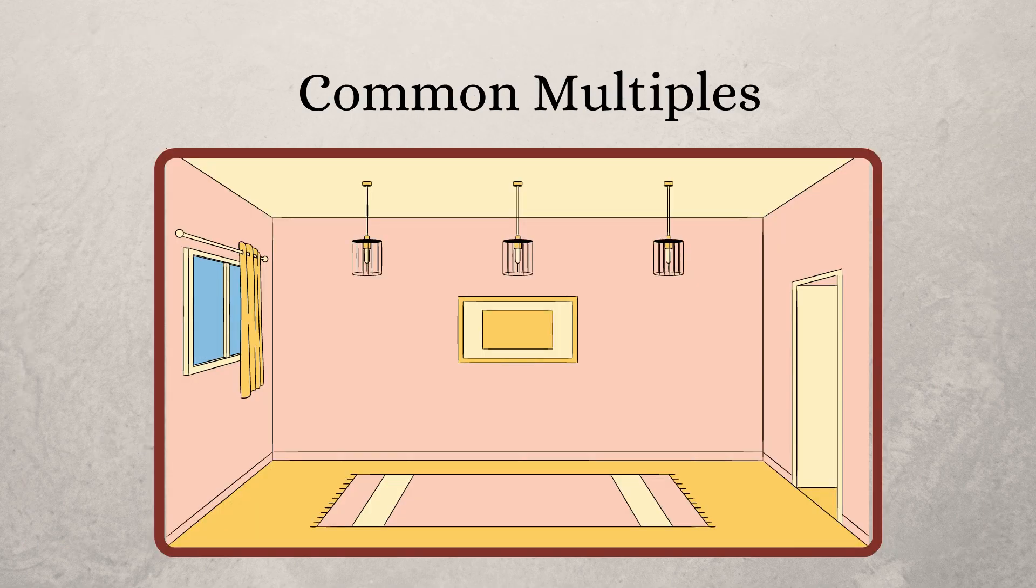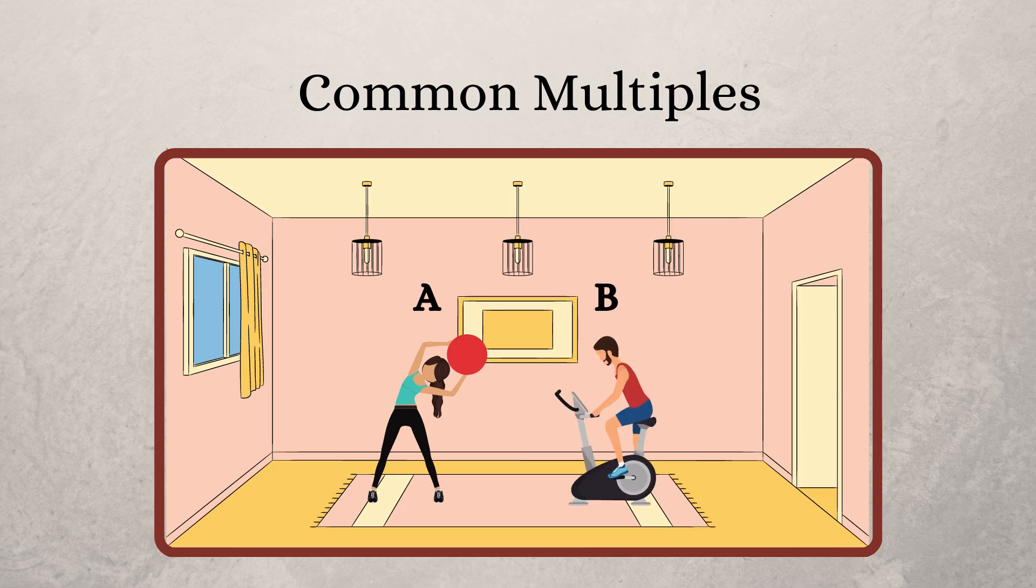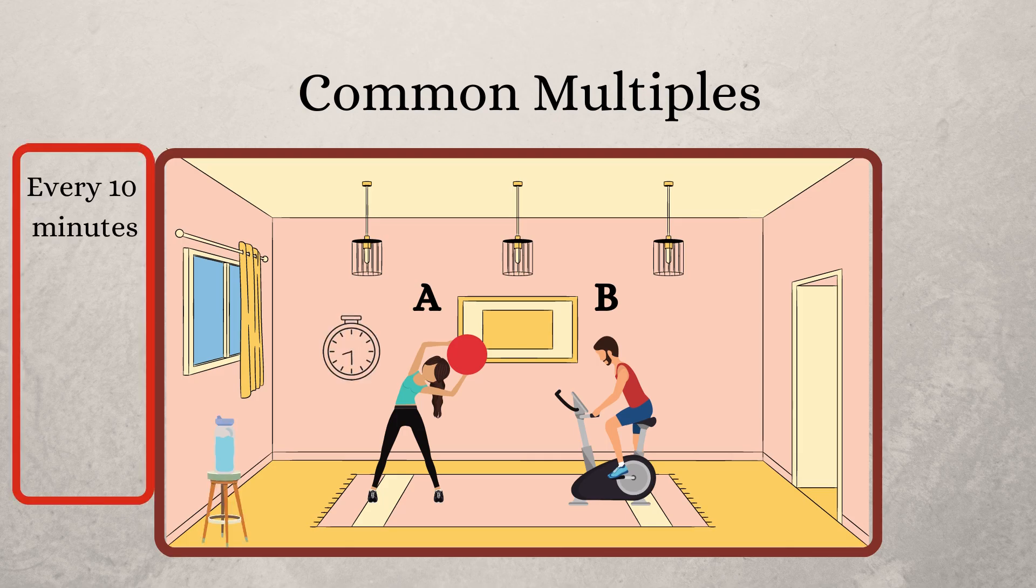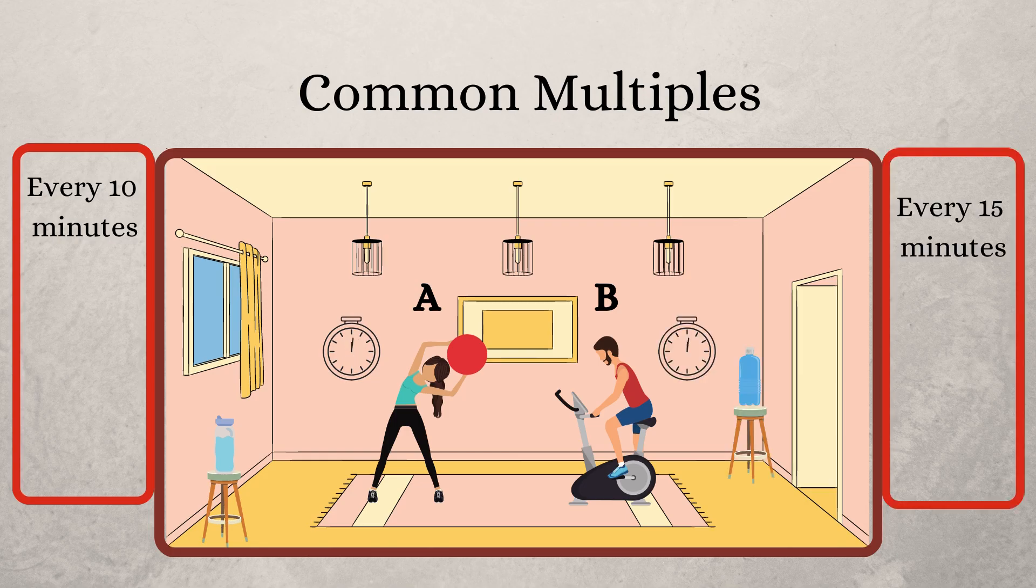Now let's move on to common multiples. Let's say your friends A and B start exercising at the same time and they plan to do for 1 hour. A drinks water every 10 minutes and B drinks water every 15 minutes.